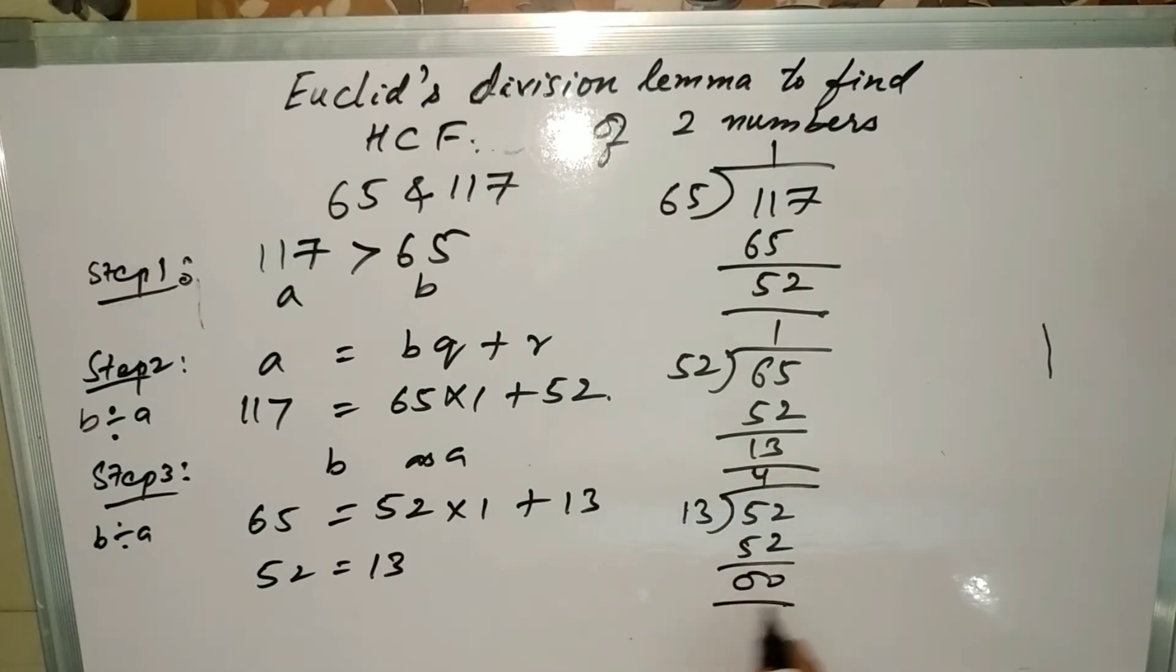13 fours are 52, so you get the remainder as 0. That means we got the remainder as 0. Until and unless we get the remainder 0, we need to repeat step 3 again and again.